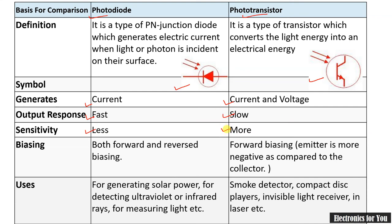The sensitivity of a photo diode is lower because it operates in reverse bias, whereas a photo transistor has more sensitivity. Biasing of a photo diode can be forward or reverse, whereas in a photo transistor the input side is forward biased and the output side is reverse biased. Photo diodes are used in solar power generation, detecting ultraviolet and infrared rays, and measuring light. Photo transistors are used in smoke detectors, CD players, and invisible light receivers. This completes our discussion on photo sensors.